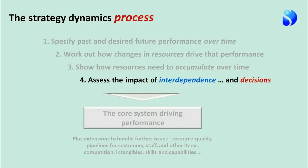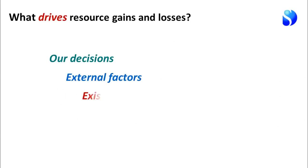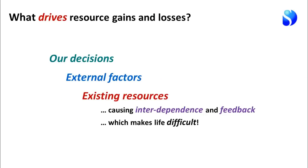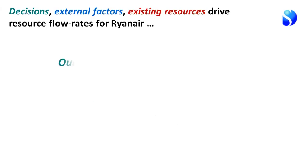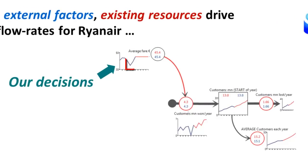The fourth step to understanding the core system is to work out how interdependence operates within the business system and what decisions do to help it develop. We've got customers flowing in and out and supply-side resources such as staff being added. What drives those resource gains and losses? There are just three categories: our decisions; external factors such as competition or market conditions; and the existing resources in the system. That third category gives rise to interdependence and feedback. An example of a decision that affected a flow rate was the decision to cut fares during 2009 — for the year ended March 2010 — so that we continued to win customers.